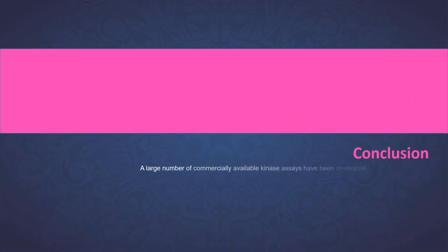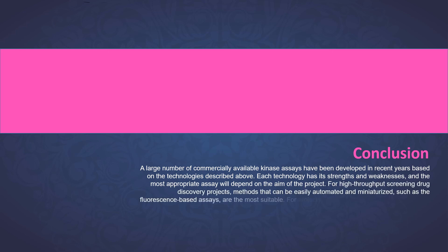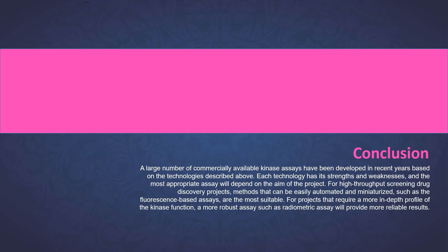Conclusion. A large number of commercially available kinase assays have been developed in recent years based on the technologies described above. Each technology has its strength and weakness, and the most appropriate assay will depend on the aim of the project. For high-throughput screening drug discovery projects, methods that can be easily automated and miniaturized, such as the fluorescence-based assays, are the most suitable. For projects that require a more in-depth profile of the kinase function, a more robust assay such as radiometric assay will provide more reliable results.